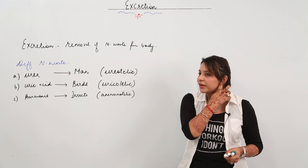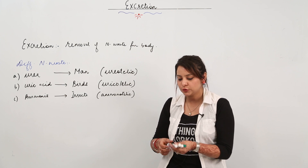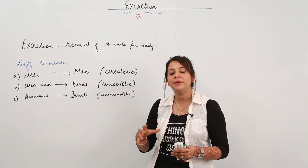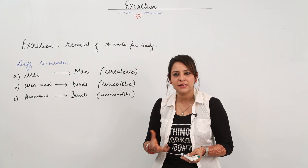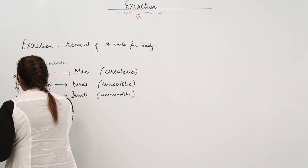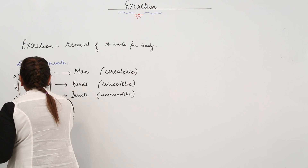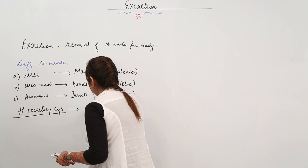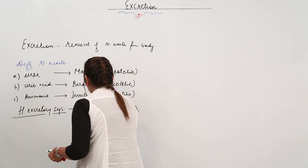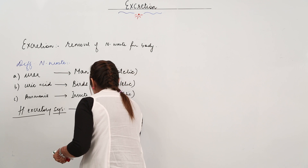Now we will start with the human excretory system, and I will also be telling you the main functions that the kidney performs as an excretory organ. The human excretory system consists of the kidney, ureter, urinary bladder, and urethra.